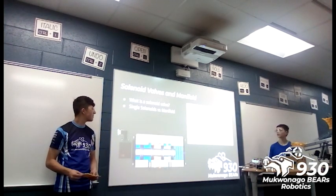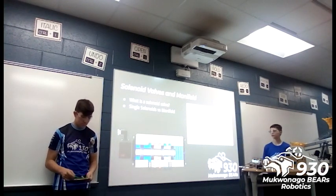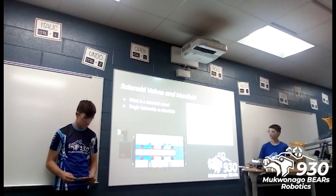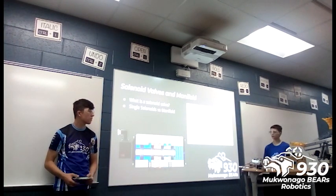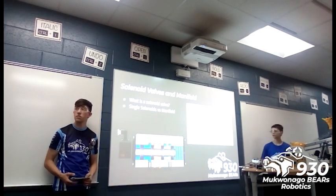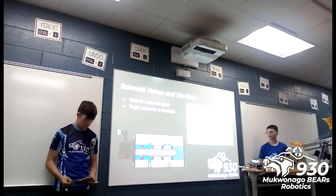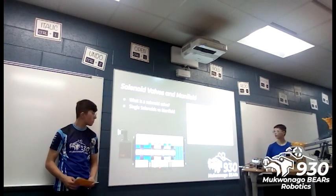A solenoid valve has two parts: the electrical solenoid and the mechanical valve. The electrical solenoid takes the electrical input, and the valve controls whether compressed air goes through the tube or not. There are two main types — double-acting and single-acting — similar to pistons. With single-acting, you have one way to open the valve and a passive spring to close it, so its default position is always the spring-extended state, meaning when the robot is turned off it always returns to that position. A double-acting solenoid allows you to move the valve in either direction, and whatever position it's in when the robot turns off, it will stay in that position.